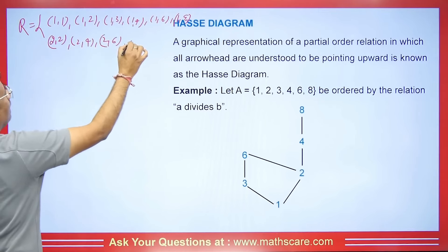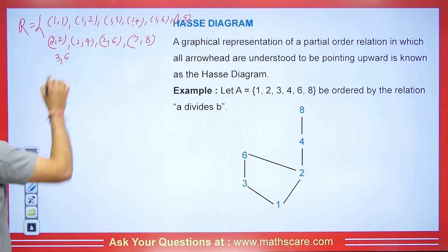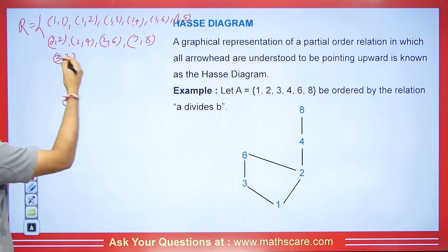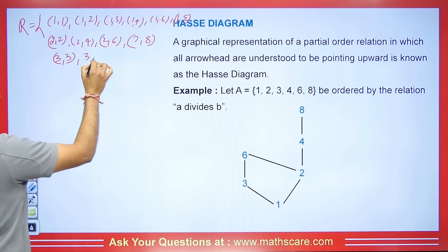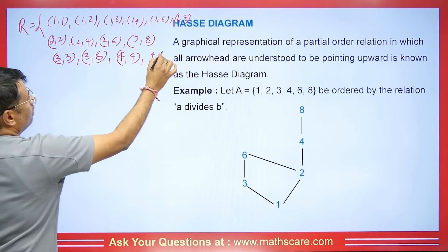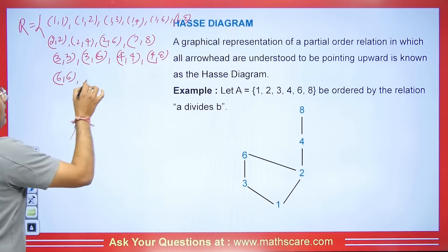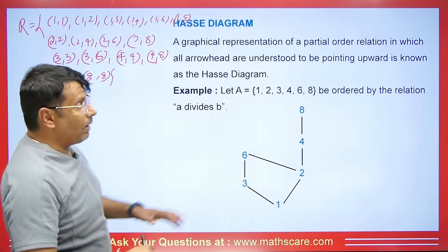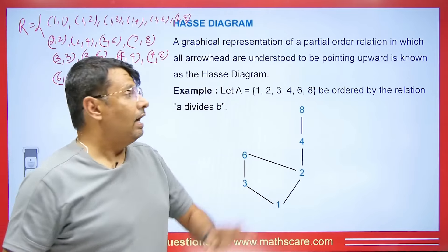For number 2: 2 divides 2, 2 divides 4, 2 divides 6, and 2 divides 8. For number 3: 3 divides 3. For 4: 4 divides 4 and 4 divides 8. For 6: 6 divides 6 and doesn't divide anything else. And 8 divides 8. This is the relationship we have.